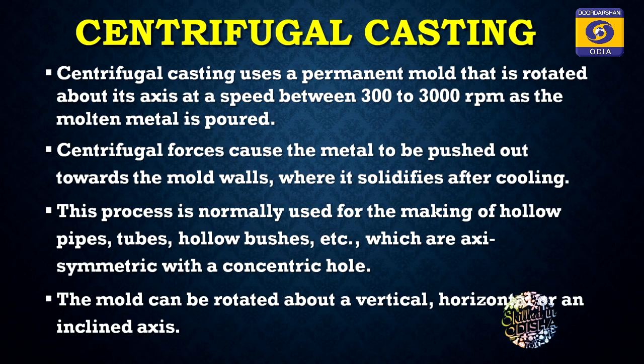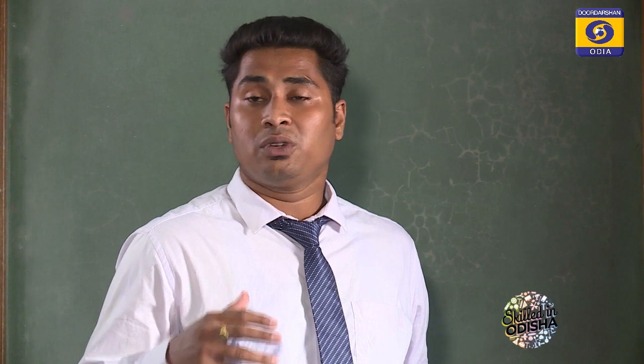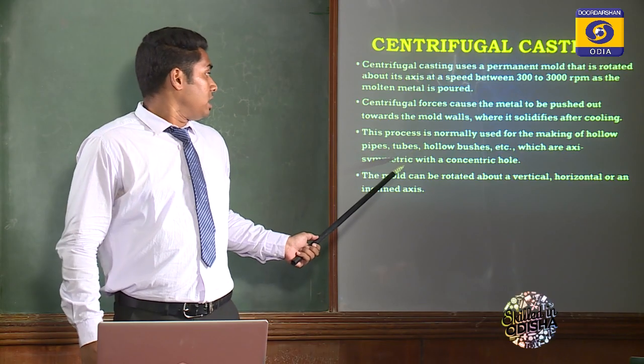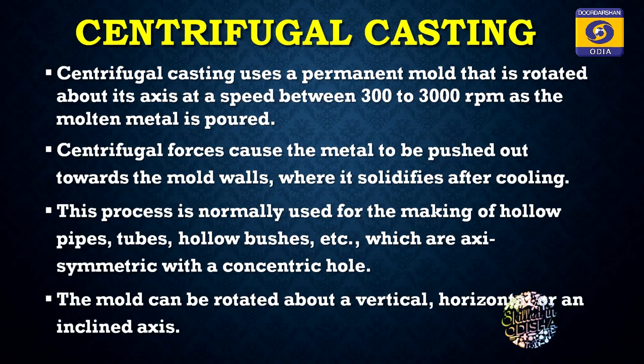This process is normally used for making hollow pipes, tubes, hollow bosses, etc., which are axisymmetric with a concentric hole. Axisymmetric means symmetrical with respect to an axis. The mold can be rotated about any axis — it may be vertical, horizontal, or at any inclined axis.